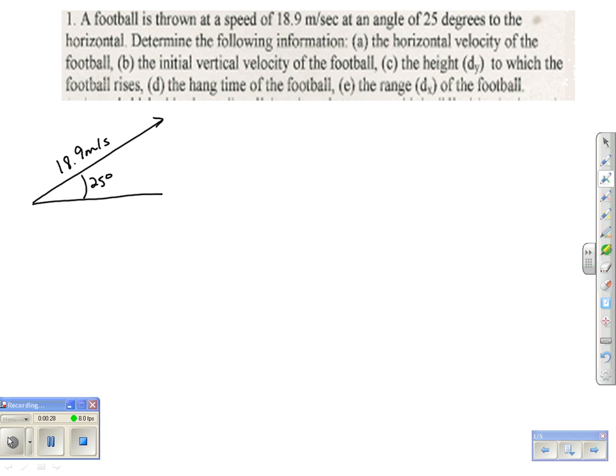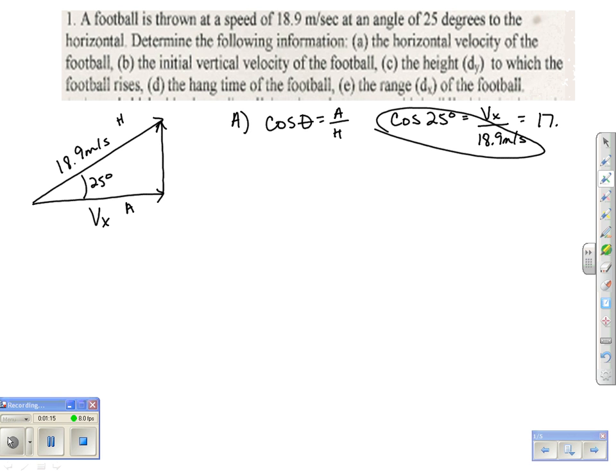The first thing they want us to do is find the horizontal velocity. Well, that's going to be our Vx right here. So for part A, I'm going to act like this is a triangle. If that's the case, I just want to know what my Vx is of this triangle using vectors and trig. So that's adjacent, this is my hypotenuse side. So I'm going to use cosine of theta equals adjacent over hypotenuse. I'm going to plug in what I know. Cosine of 25 degrees equals my Vx over 18.9 meters per second. Algebraically, I need to cross multiply, and that comes out to be 17.13 meters per second. That's my first answer.